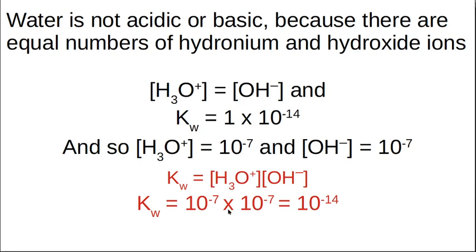If you don't know how this works, go back and learn your exponent laws. The bases are the same, so you can add the exponents: negative 7 plus another negative 7 is negative 14. From this, you can see that the concentration of hydronium ions is 10⁻⁷, and this is how we get a pH of 7 out of water.